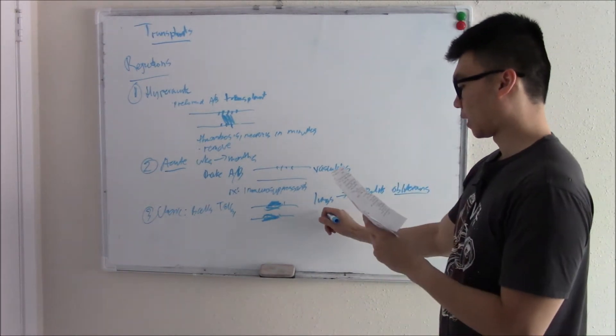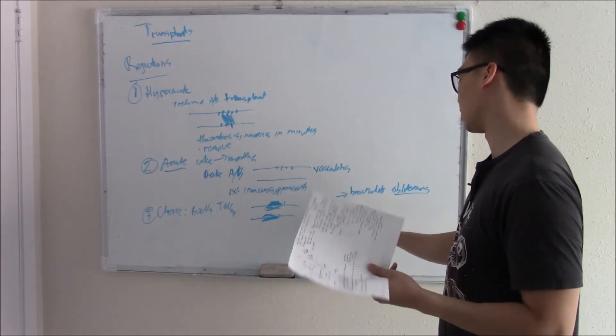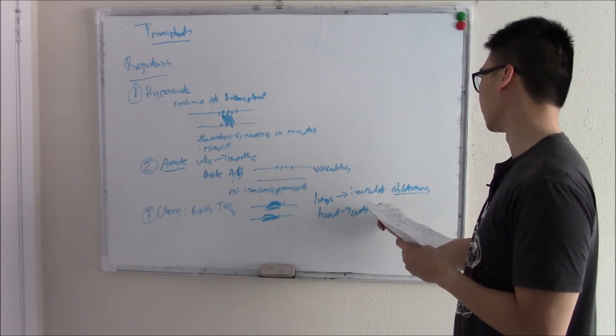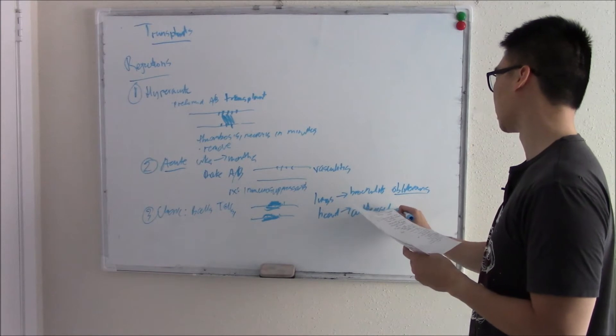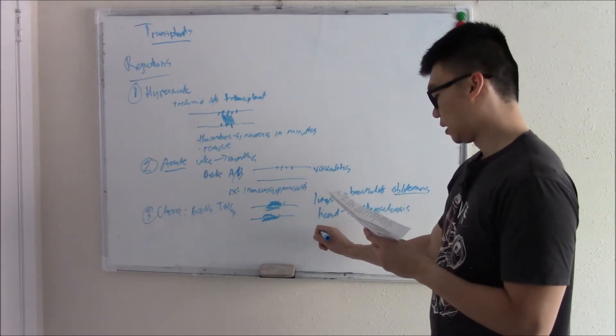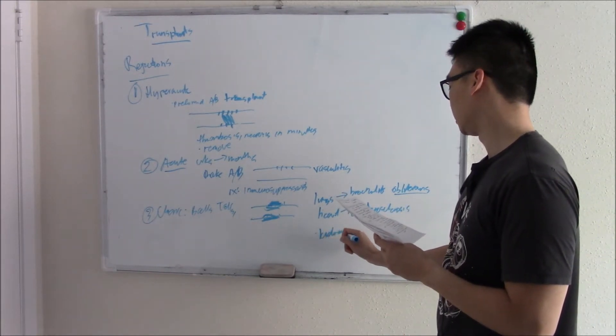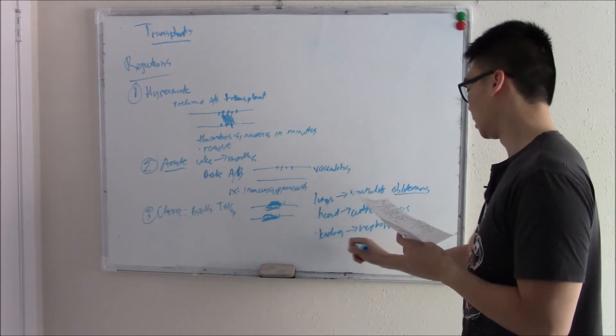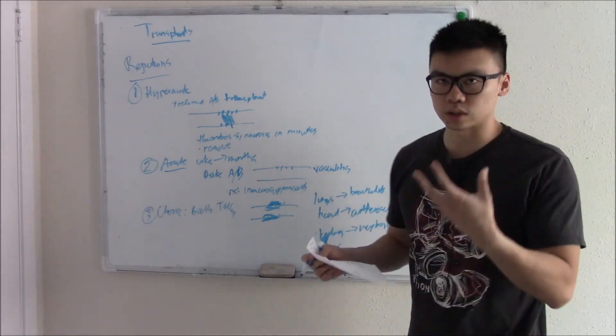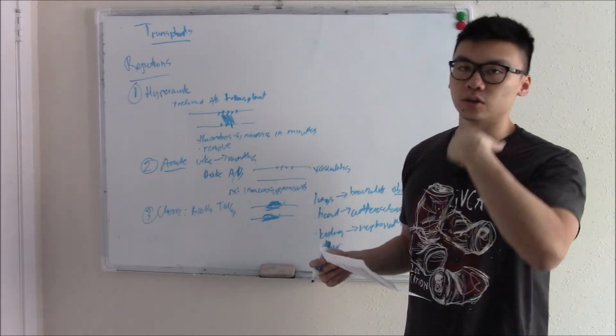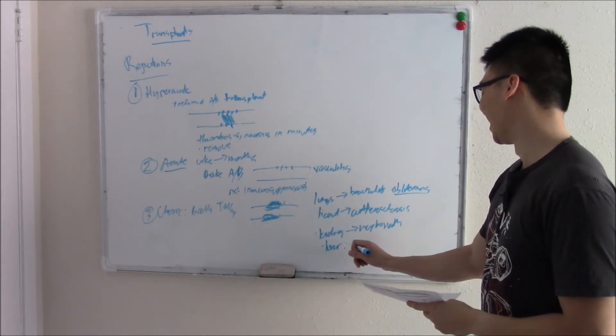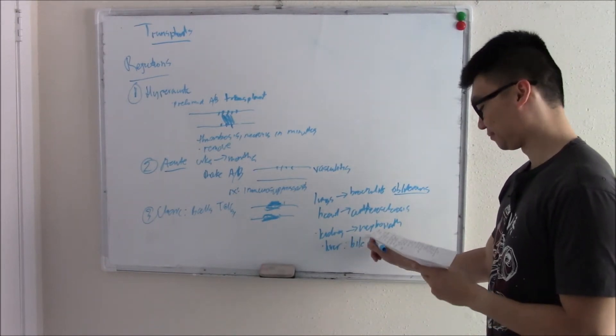You basically obliterate your lungs. You get fibrosis, pulmonary hypertension. In your heart, if you have narrowing of the vessels, we call it arterial or atherosclerosis. So you have accelerated atherosclerosis, you can get MIs and stuff like that. Kidneys, you get nephropathy. Liver destroys your vessels and also destroys your bile ducts. So you can't drain bile, you get hepatomegaly, you get jaundice. So I'll just write bile ducts.